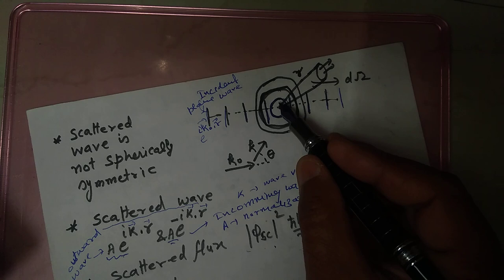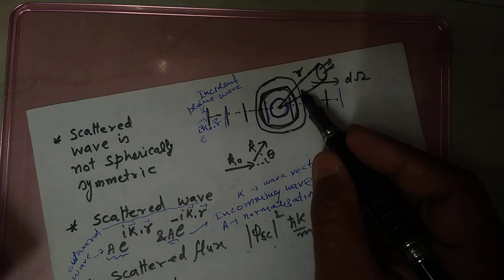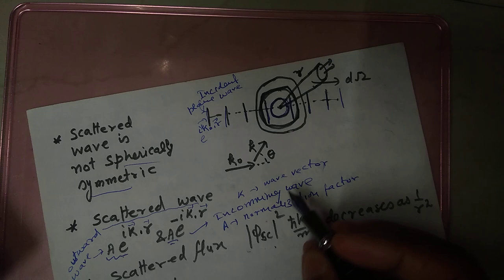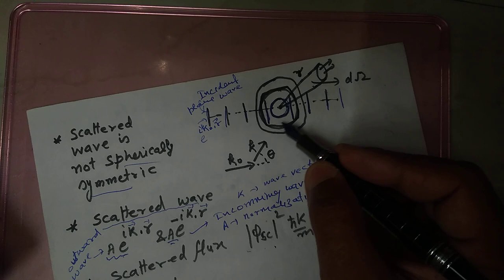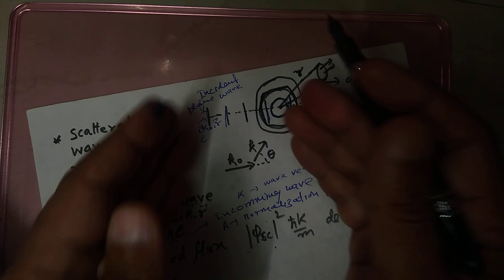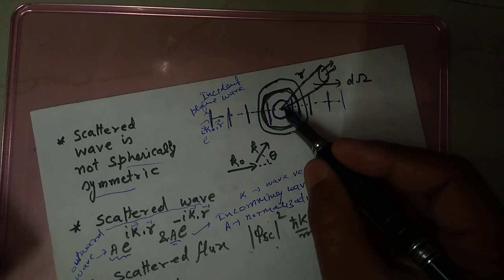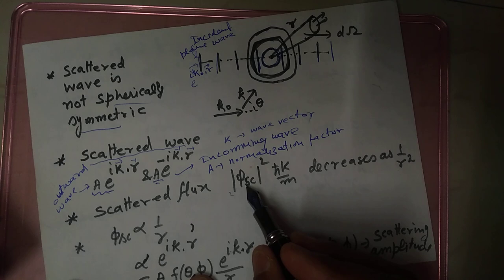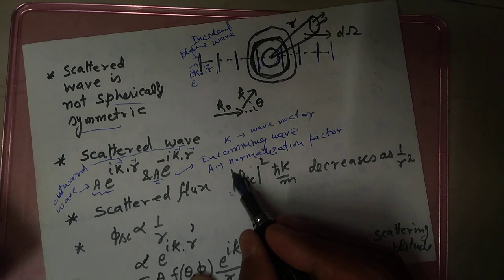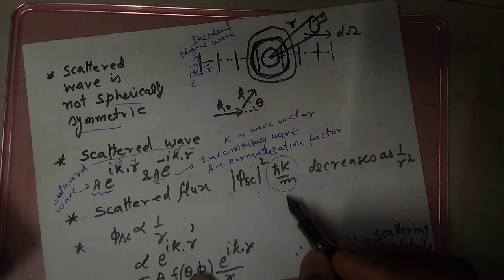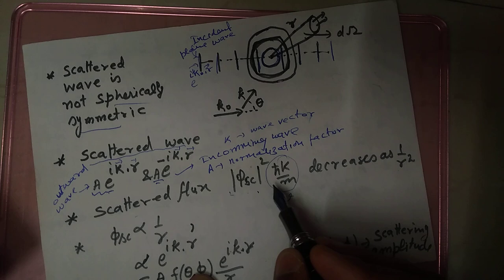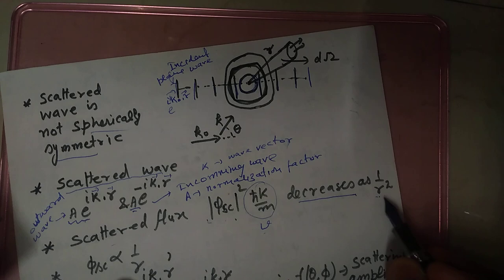If you see this diagram, you can see that this is representing the scattered component — not spherically symmetric. And you know that with the passage of time, what is happening is it is going in the outward direction, which means that the scattered flux — we can denote it with this wave function squared, the scattered wave function square, into ℏK/m. So if we multiply it with the velocity of the scattered particle, that gives us the scattered flux. The scattered flux decreases as 1/R².